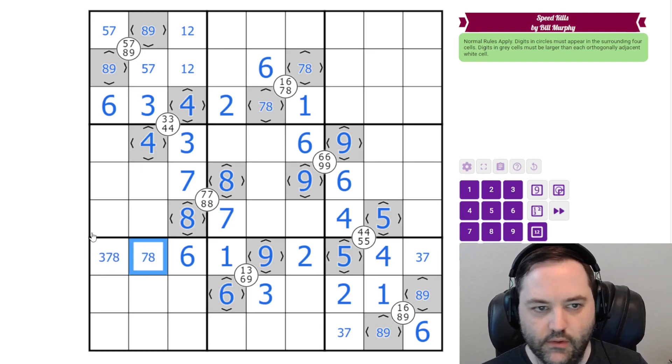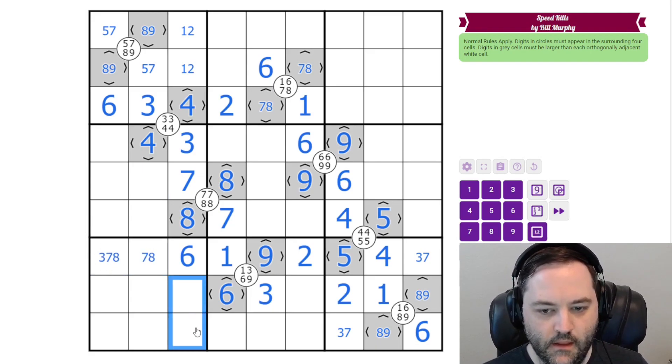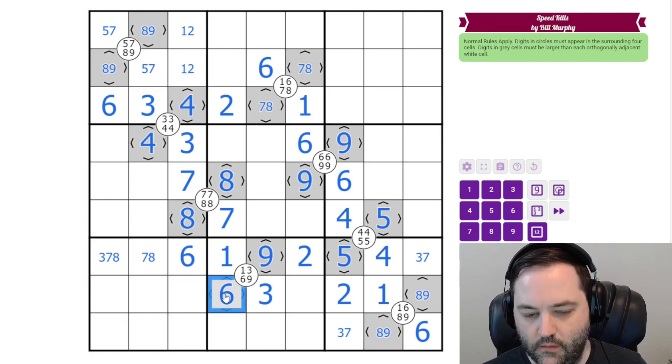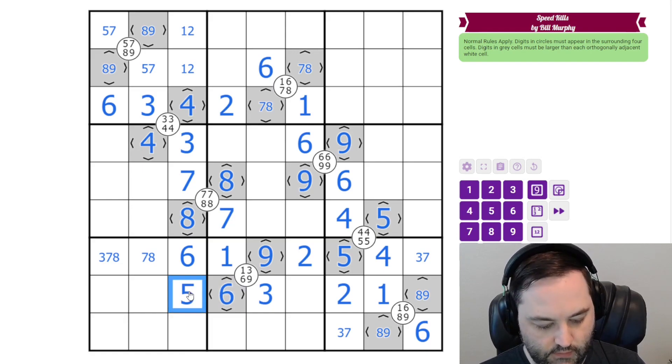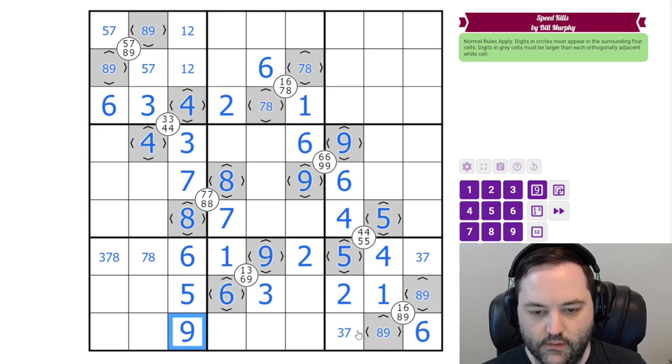These are going to be 5 and 9 in some order, and the 6 tells us this must be 5 to be less than the 6. Now the 9 is going to give us 8 and 9.